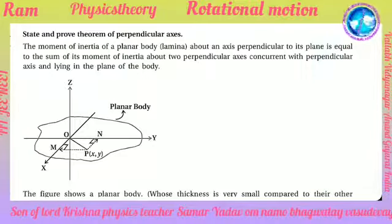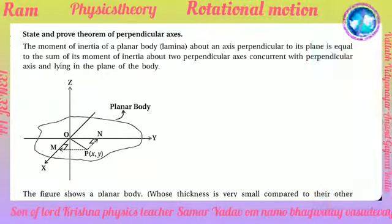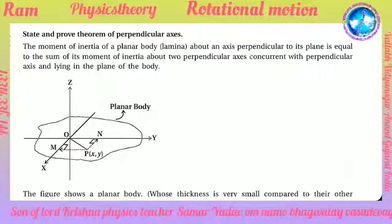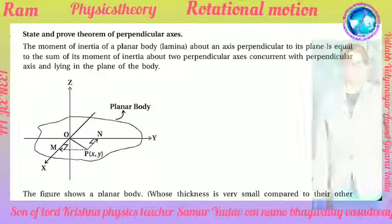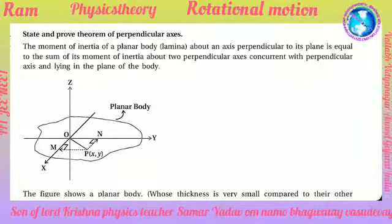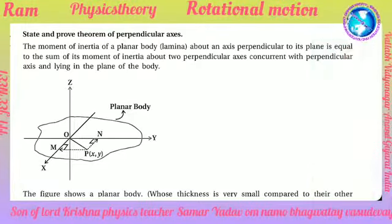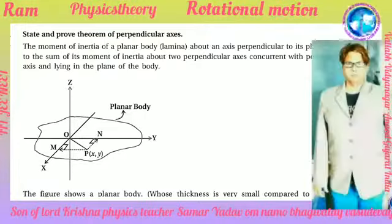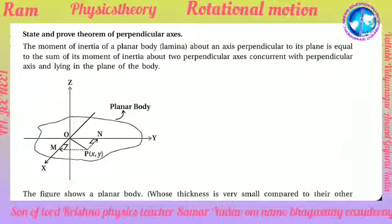State and prove the theorem of perpendicular axis. The moment of inertia of a planar body (lamina) about an axis perpendicular to its plane is equal to the sum of the moments of inertia about two perpendicular axes concurrent with the perpendicular axis and lying in the plane of the body.